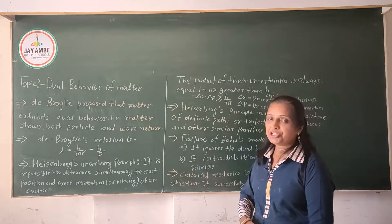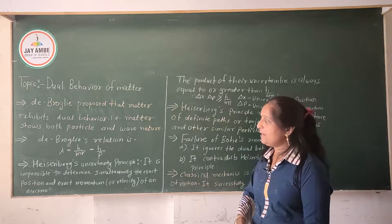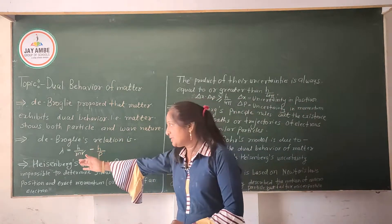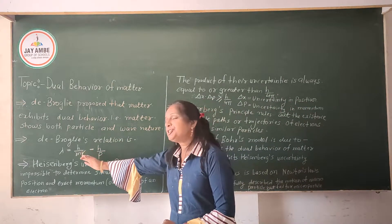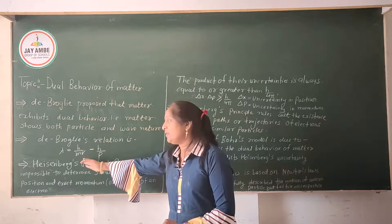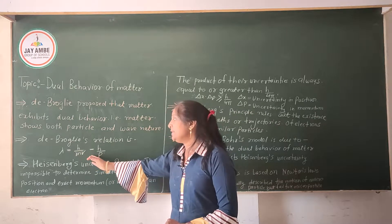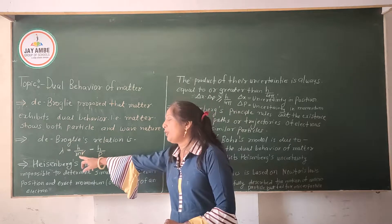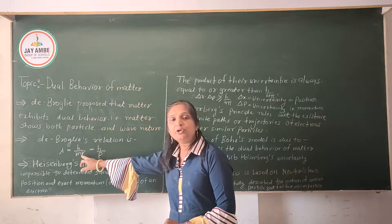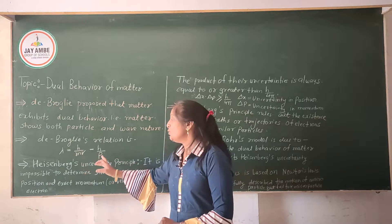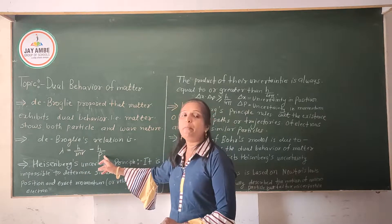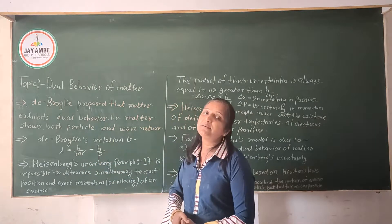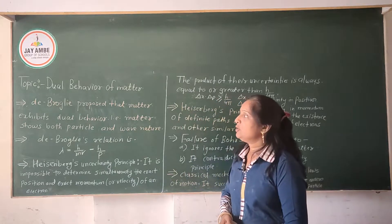De Broglie's relation is explained with the equation: lambda is equal to h upon mv, and that is equal to h upon p, where mv is the product of mass into velocity, which is equal to momentum, where p is the momentum.